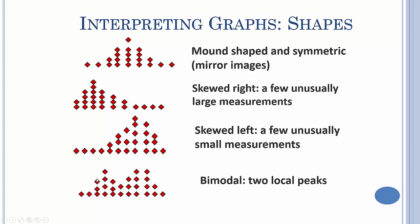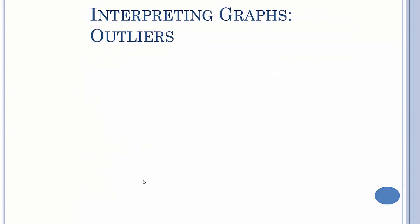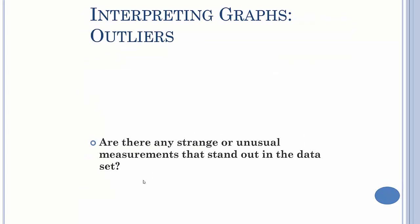This is called bimodal because you have a mode here where you have a lot of things, and then you come up here and you have another mode up here where you have a lot of things. So if you have more than one peak, it's called bimodal. If you have more than two peaks, you just call it multimodal.